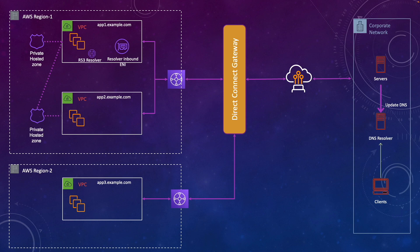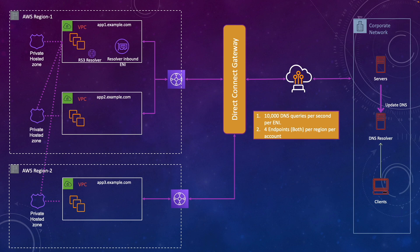What if you have another region with an application like app3.example.com? You have your private hosted zone, and you can associate it with the VPC in a different region. A private hosted zone can be associated with multiple VPCs across multiple regions, so you can resolve app3.example.com as well. A few scaling limits to keep in mind: each resolver endpoint ENI can handle only 10,000 DNS queries per second, so if you need 40,000–50,000 QPS you need multiple endpoints. Also, you can have only four endpoints per region per account. Keep these limits in mind when designing your solution.